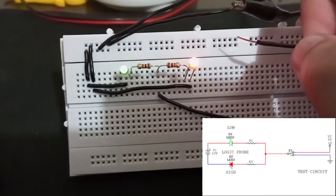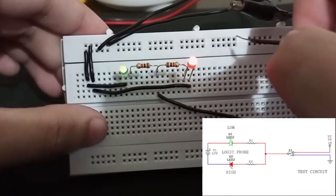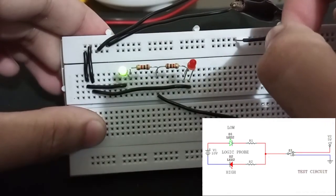As we can see, the probe functioned as intended, green if low, and red if high.